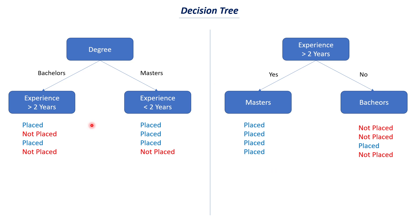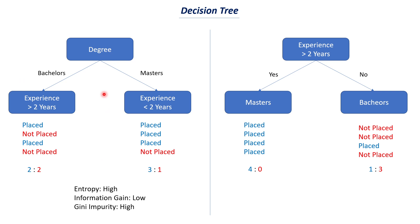In the first decision tree's terminal nodes: two people are placed and two are not placed in one node, and three placed and one not placed in another — so there is a mix of classes. In the second decision tree: four people are placed with no one not placed in one node — a perfect segregation — while one person is placed and three are not placed in the other. We say the first decision tree has high entropy, low information gain, and high Gini impurity, whereas the second decision tree has low entropy, high information gain, and low Gini impurity.